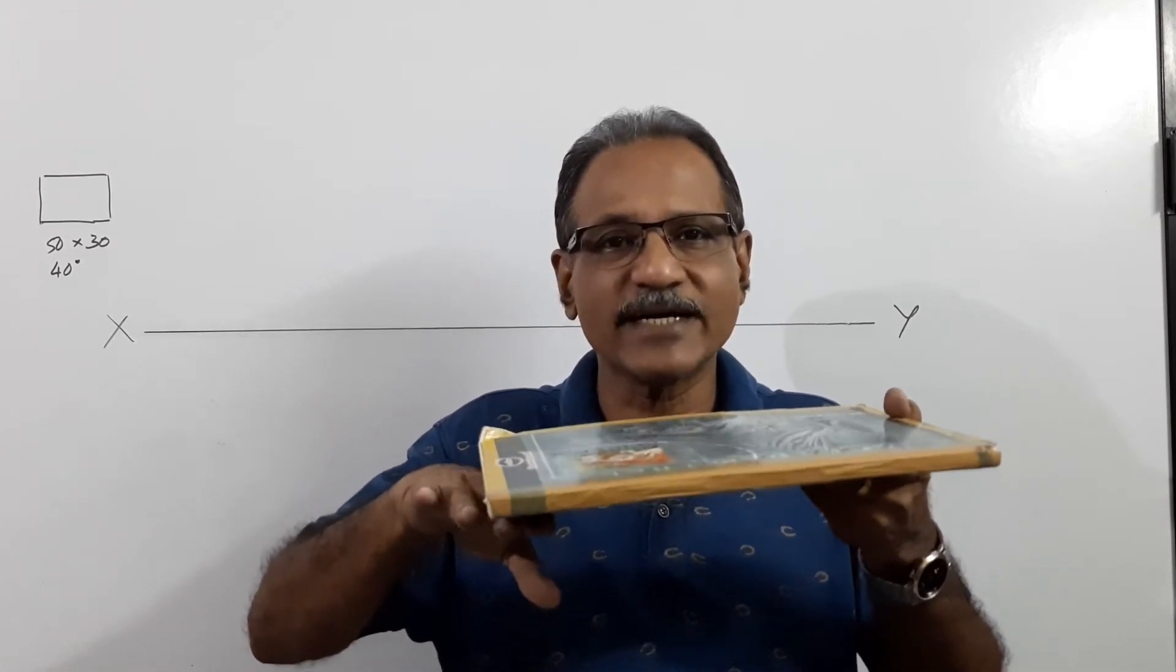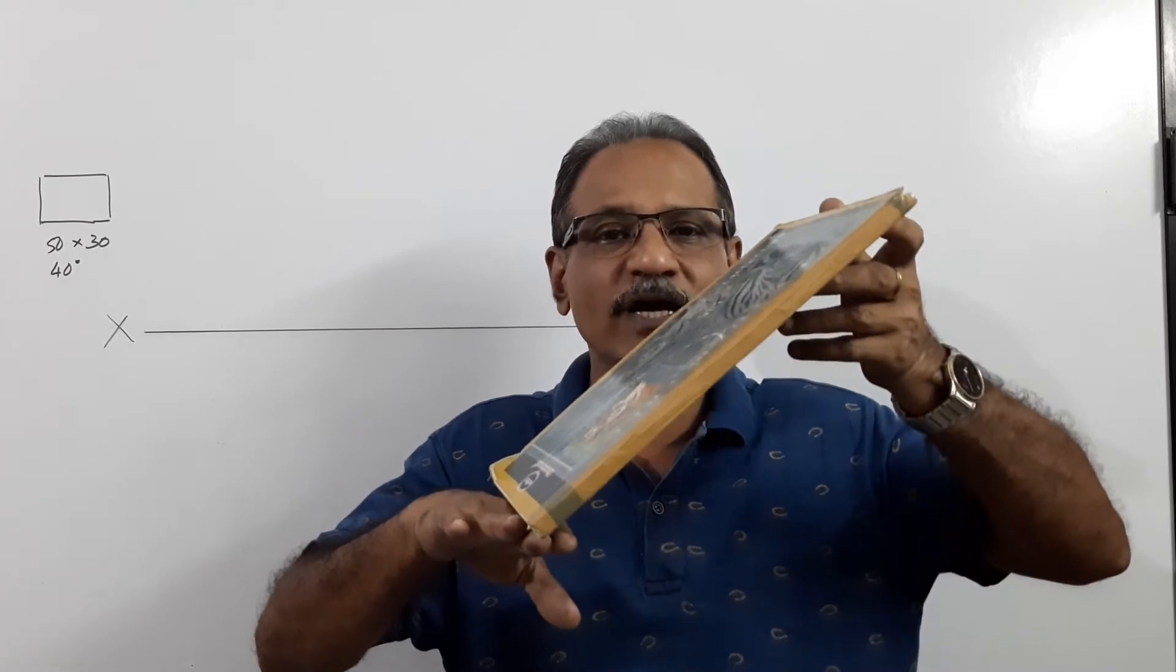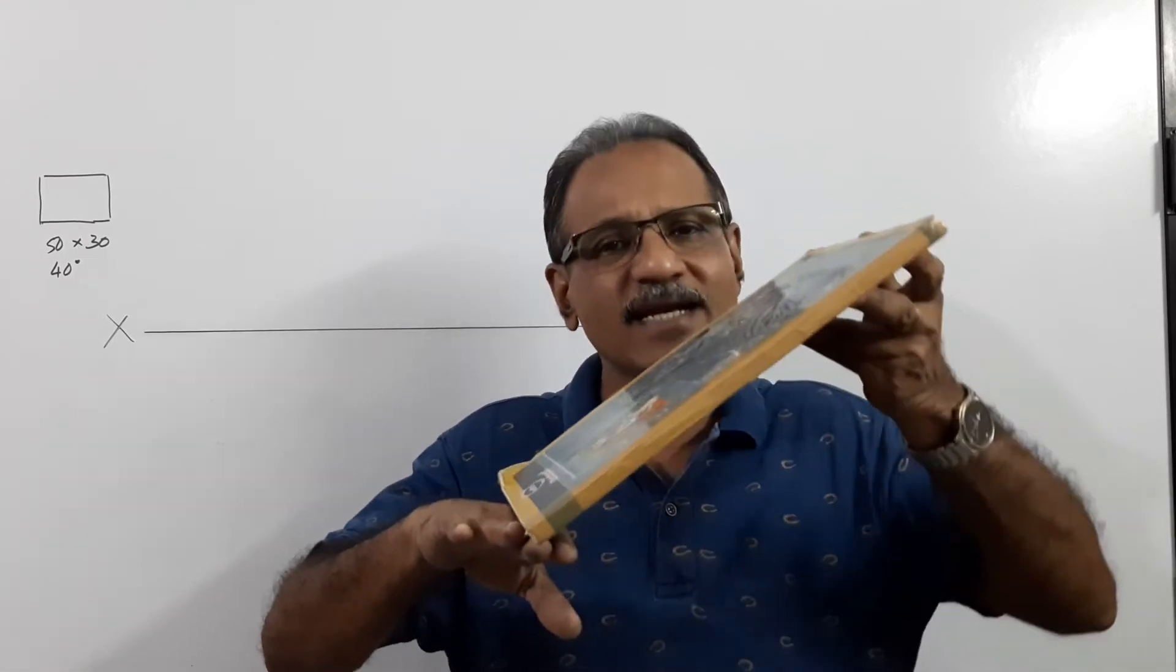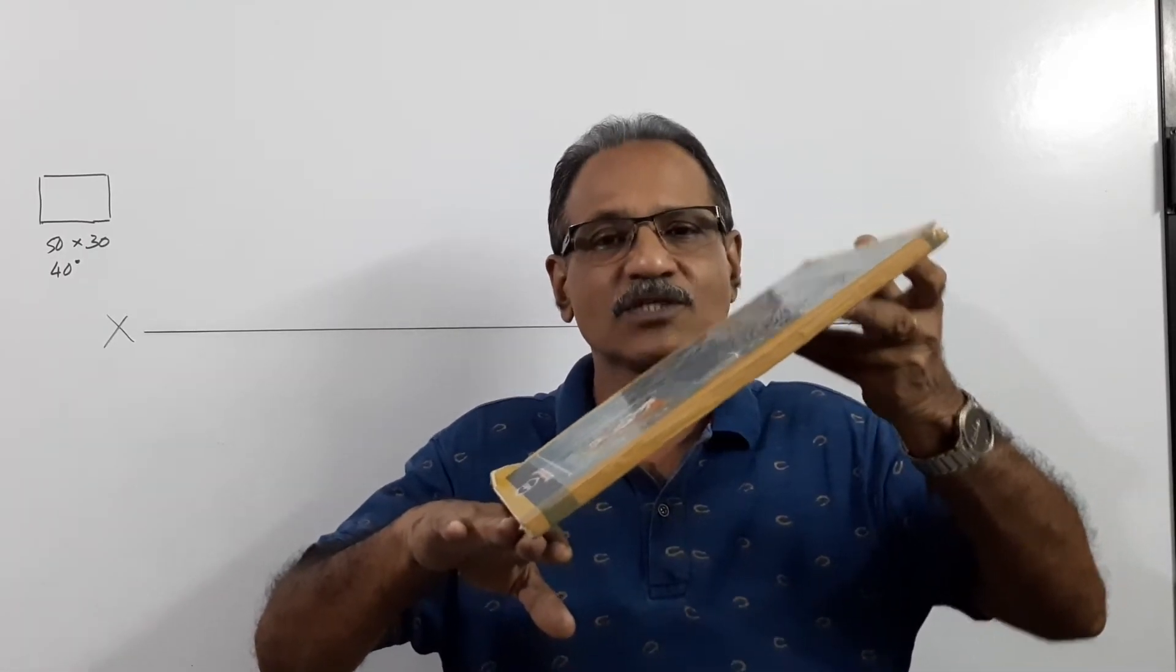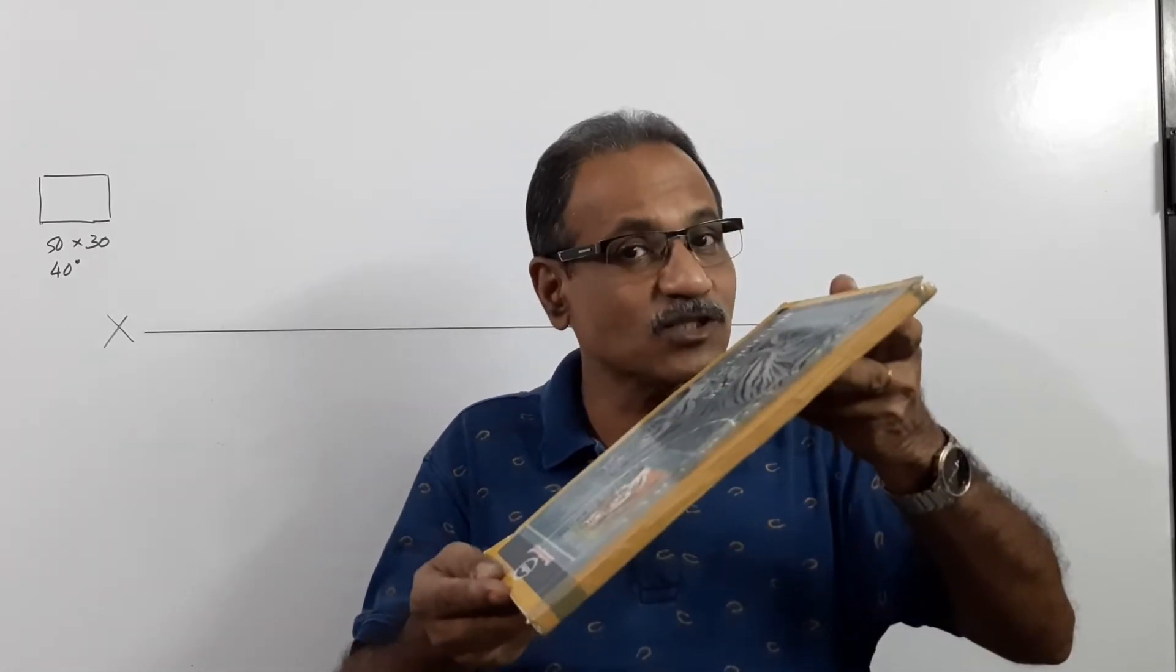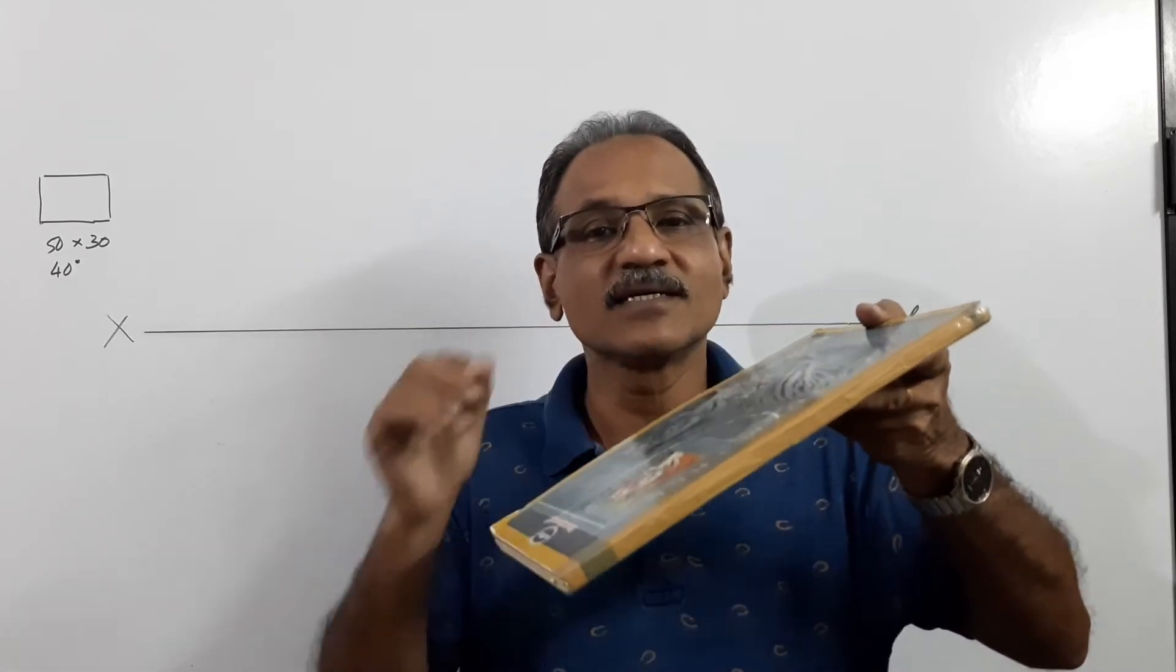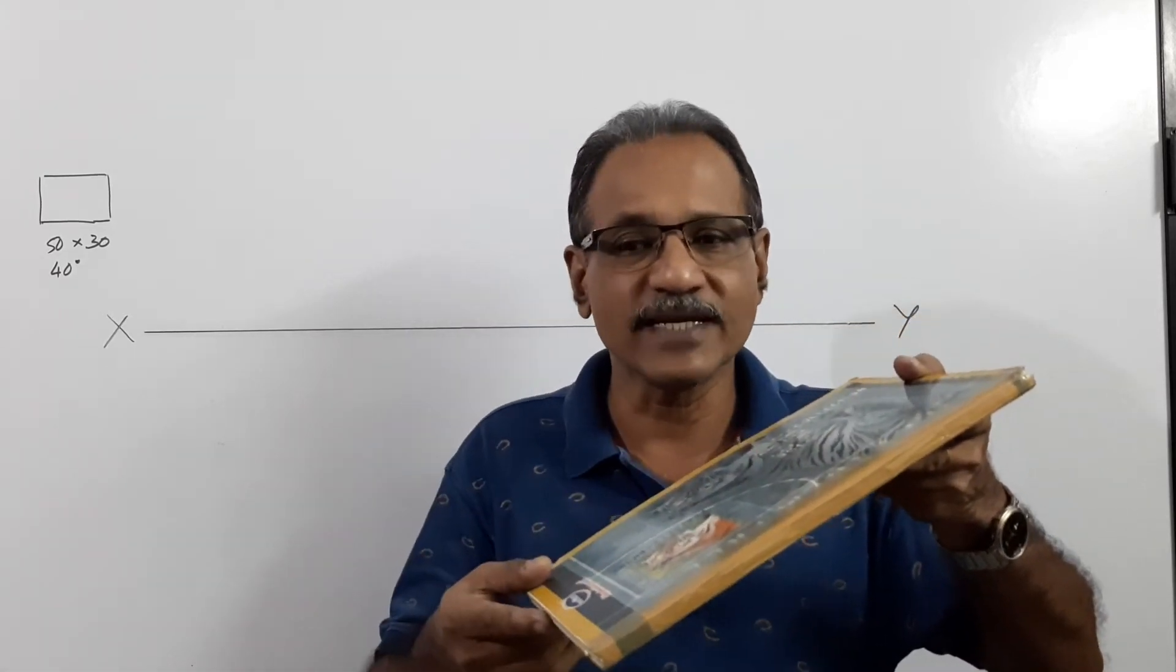Keeping this side, shorter side on HP, how can you make the plan a square? By lifting this side. How far you have to lift? You have to lift it till the plan becomes a square. So the question says a shorter side is on HP, the plan is a square of 30 mm side, and a longer side makes 40 degrees to VP. That's the question, let's draw it.